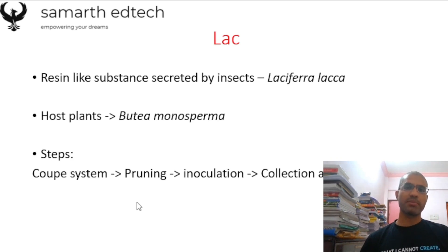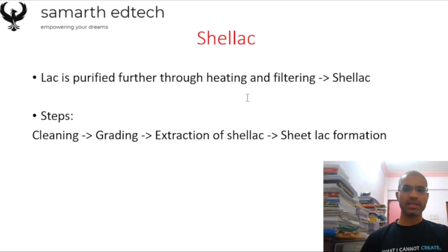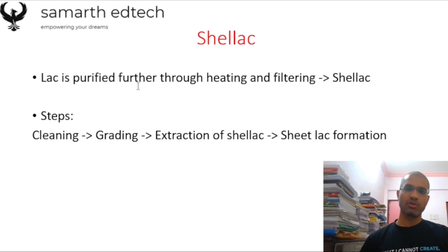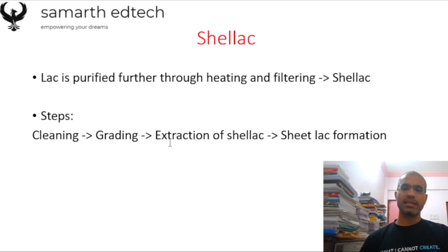You should remember the names of the lac production steps so that if a 50 or 100-word answer is required, you have material to write. Shellac is manufactured from lac itself — the lac is purified through heating and filtering. The steps are: obtaining the lac, then cleaning, then grading, then extraction of shellac, and finally sheet lac formation.